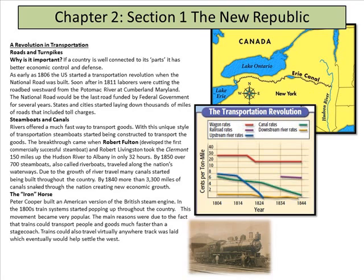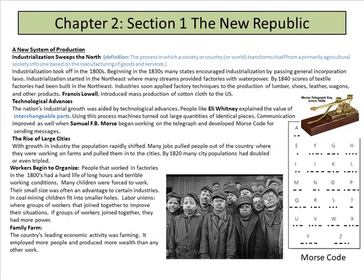All of this information brings about new systems of production. Industrialization sweeps the North. The definition of industrialization is the process by which a society or country transforms itself from primarily agricultural — where you grow things — into one based on manufacturing goods and services, where you make things. So: grow to make.